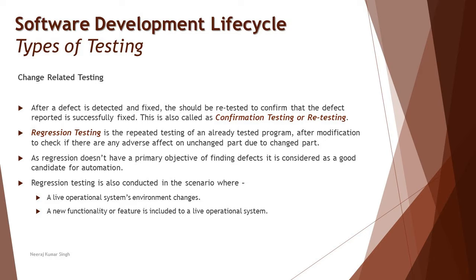When we talk about executing tests and performing those necessary executions, that's where we have failures and we need to do retesting on those tests which once closes the defect. But the point is, it is not limited to that. Retesting and regression testing happen globally — wherever any changes happen, these two are a part of it. They are independent and do not fall under any particular classification.